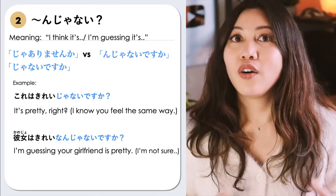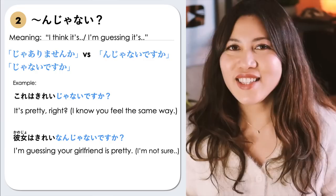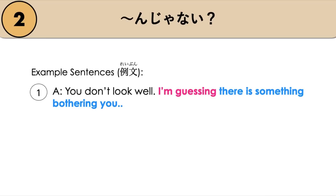On the other hand, んじゃないですか means 'I'm guessing.' For example, 彼女はきれいなんじゃないですか means 'I'm guessing that your girlfriend must be pretty.'